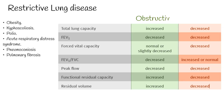During restrictive disease, capacities are decreased. Total lung capacity is low, peak flow is low, residual capacity and residual volume are also low. The ratio of forced expiratory volume in one second to forced vital capacity is normal or elevated. This is an important difference between obstructive and restrictive lung disease.